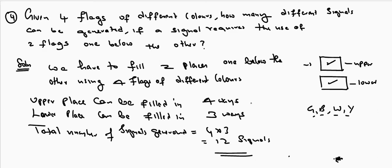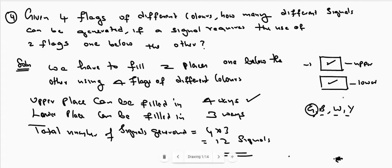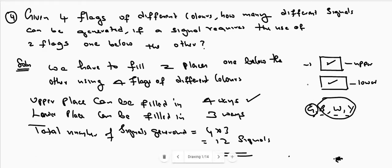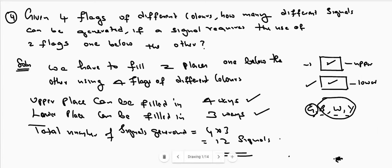The upper place can be filled in four ways. The lower place can be filled using the remaining three flags — if green is used in the upper place, there are only three remaining flags — so the lower place can be filled in three ways. The total number of ways is equal to four into three, which is twelve ways.